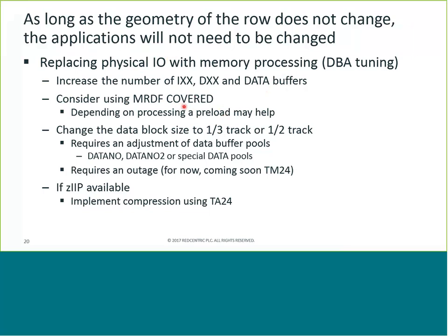One thing we noticed at one site: after an IPL, the first couple of days all the batch ran much slower because the cache was gone. It may be a requirement that as part of the IPL process — or immediately after — you have small jobs that read all the rows in covered tables to re-populate the cache, so that by the time users hit the system in the peak processing period, it's already pre-loaded. Also, change the block size to at least one-third track, preferably half-track — on a 3390 that's 27,998 bytes. Half-track blocking should be the norm for all database datasets and sequential files. The performance improvement, particularly for DB Utility, can be a factor of six.